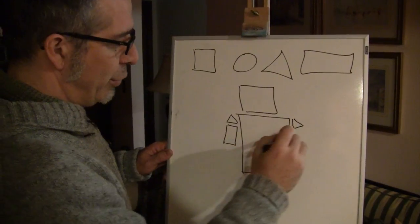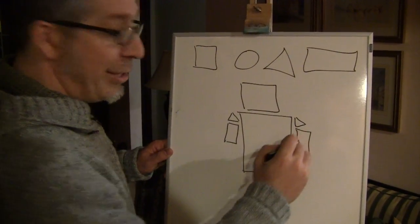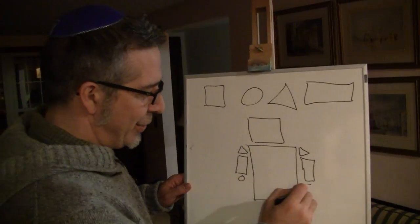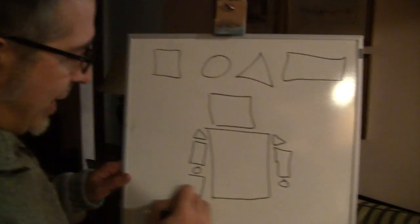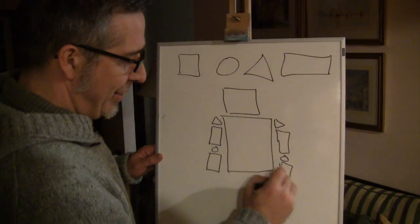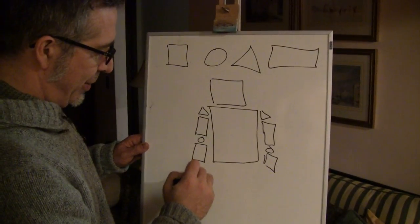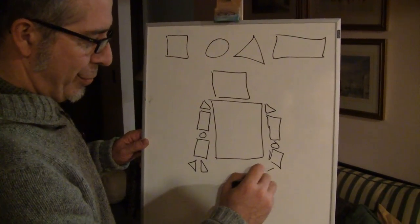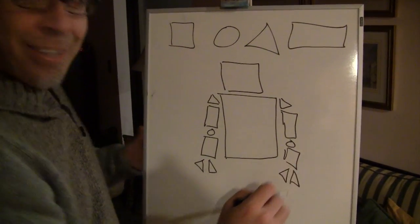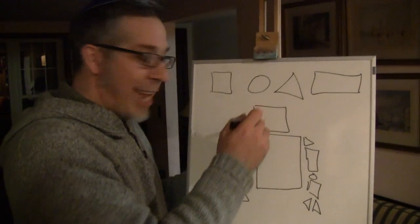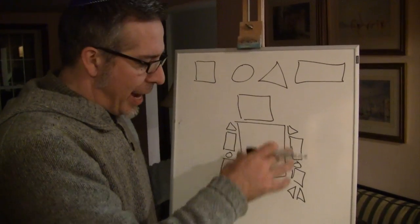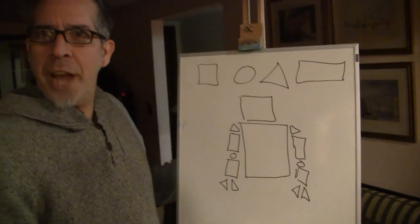Rectangle, like this. Circle, circle. Rectangle, rectangle. Triangle, triangle. You've got the robot's head, the body, arms and hands. What's next?